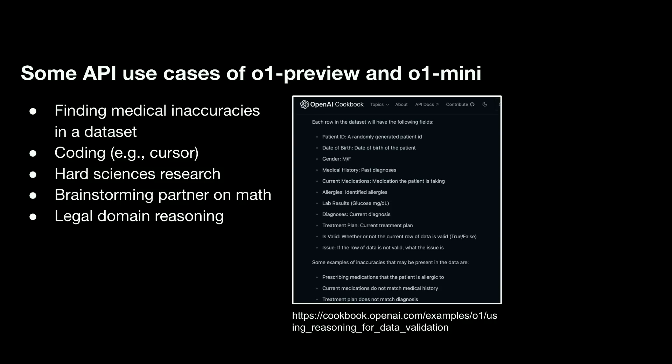Finally, a few use cases for O1 preview and O1 mini in the API. One is medical inaccuracy detection from the OpenAI cookbook — given a bunch of information and a diagnosis, O1 preview tries to detect whether it's correct. Coding is another great example, such as use cases like Cursor. Hard sciences research is another strong use case, and we've heard these models work well as brainstorming partners on math problems or legal domain reasoning.